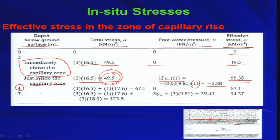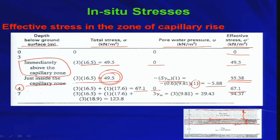At depth 4 meter — the ground water surface level: total stress = 3 × 16.5 + 1 × 17.6 = 67.1 kN/m², where 17.6 is the unit weight of moist sand in the capillary zone. Pore water pressure = 0, because this is the free water surface exposed to atmospheric pressure. Therefore effective stress = 67.1 kN/m².